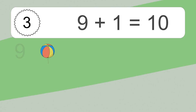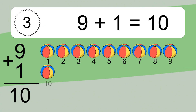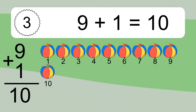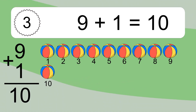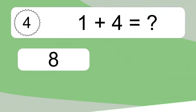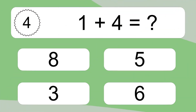Nine plus one equals ten. Let's count it: one, two, three, four, five, six, seven, eight, nine, ten. One plus four equals what?